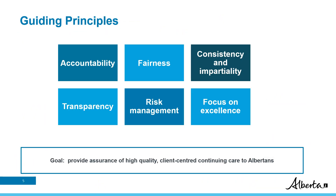There are six guiding principles that guide the work of the licensing and compliance monitoring branch: accountability, fairness, consistency and impartiality, transparency, risk management, and a focus on excellence. Alongside the principles is the use of administrative fairness, which affirms fair decision making and administrative processes. With the guiding principles and administrative fairness, the branch will work with operators, providers, residents, clients, and their families to improve accommodation services and the provision of publicly funded care to Albertans.